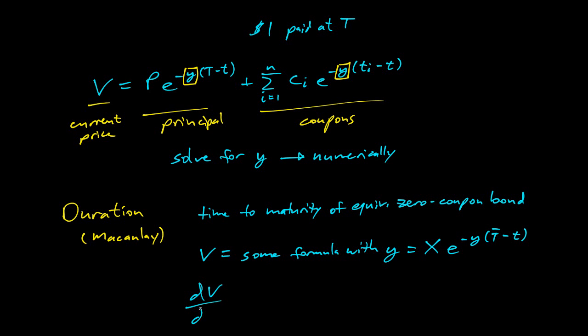Now we can look at dV/dy, the derivative. So this will be something there. And then over here, we'll get negative X times T bar minus T, e to the negative Y times T bar minus T.